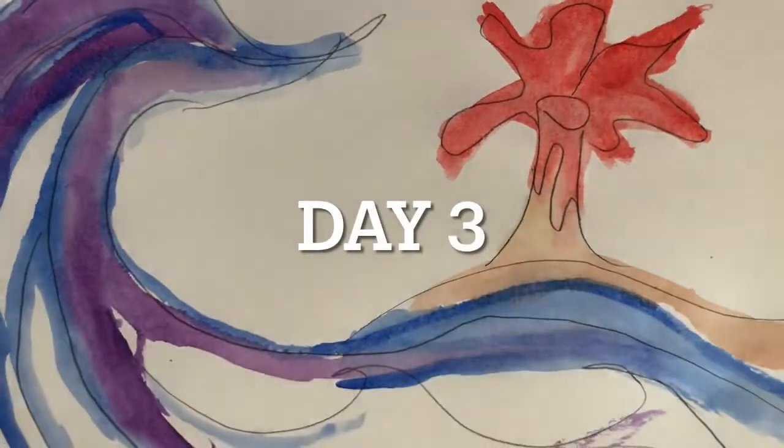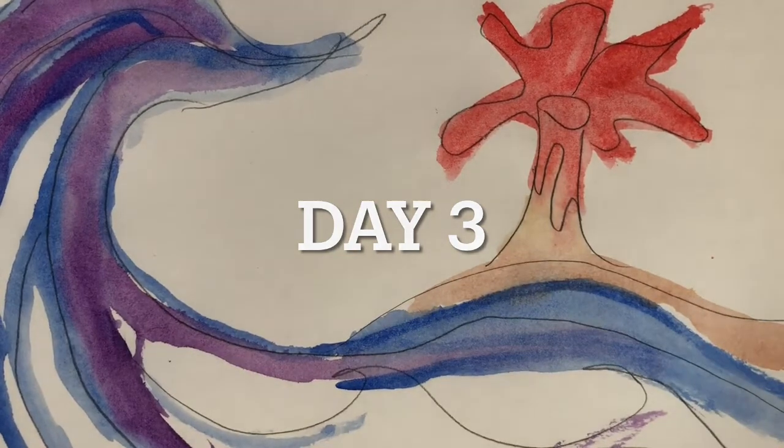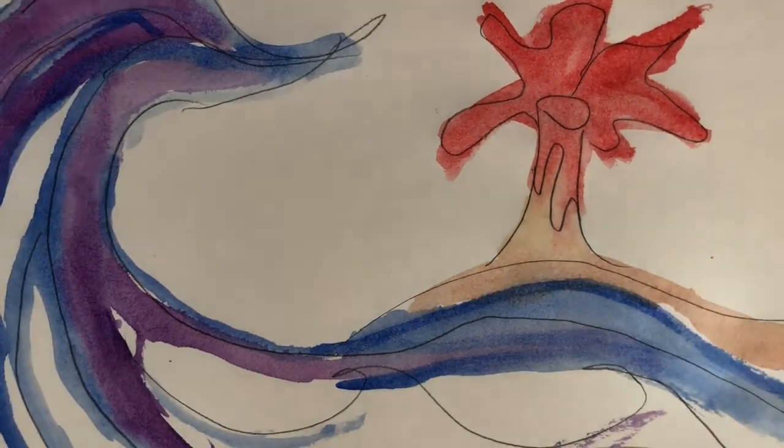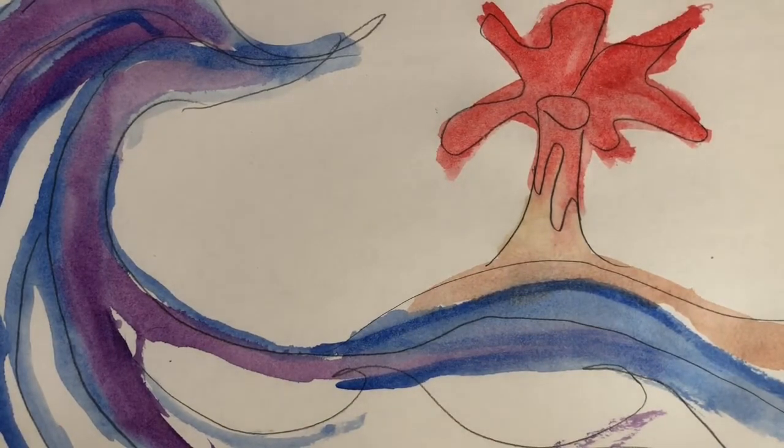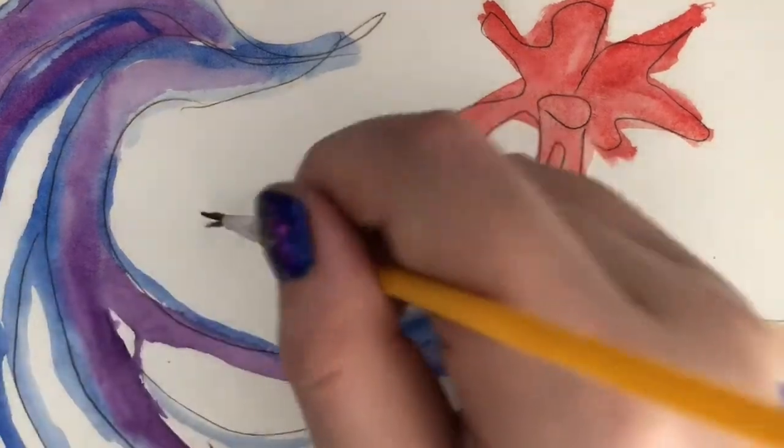We're just gonna pretend that my wave is done here. And we're gonna start working on our background. Now, the background can be blue if it's like a sky. It can be black like it's nighttime. But I think that I wanted to make it like a sunset, so I'm gonna make it yellow.